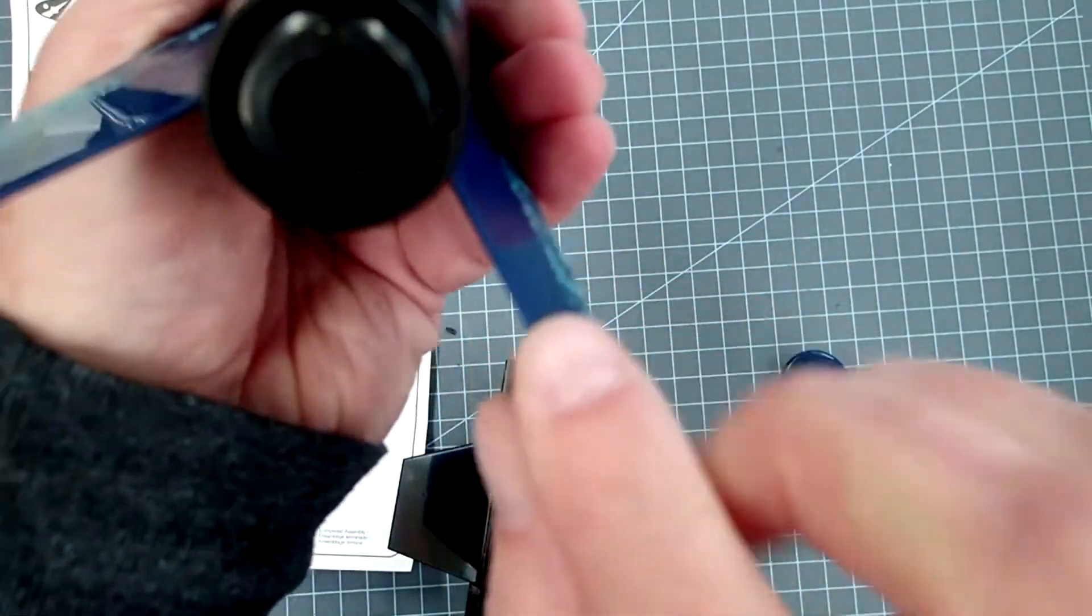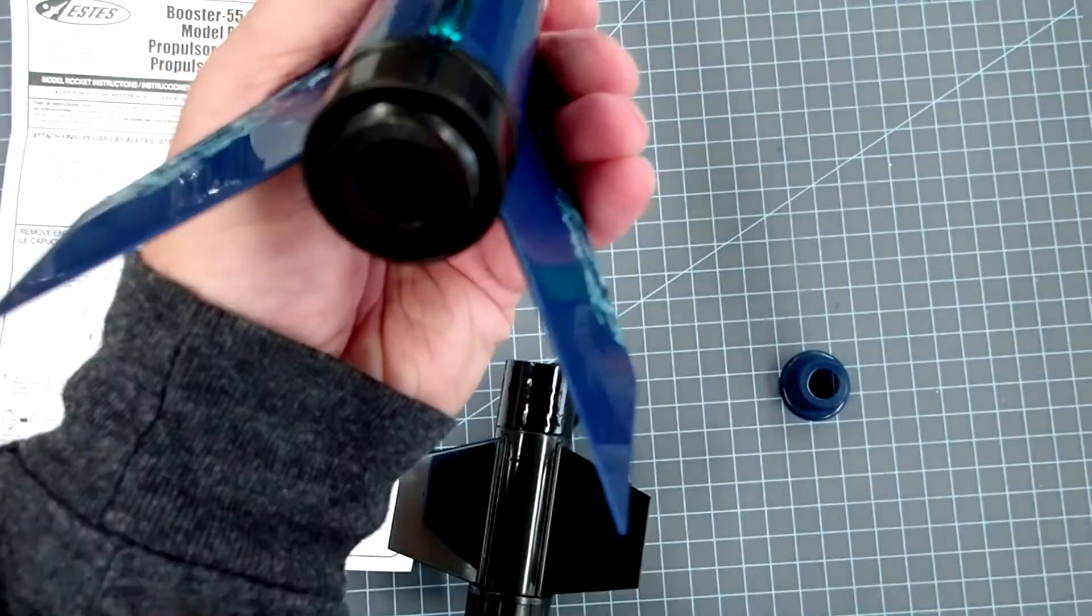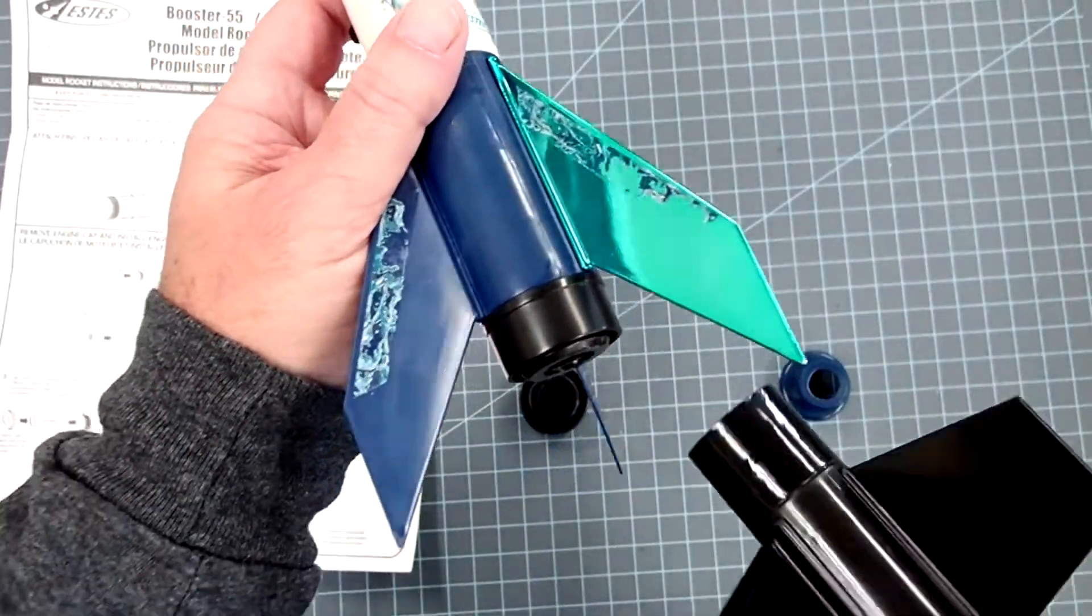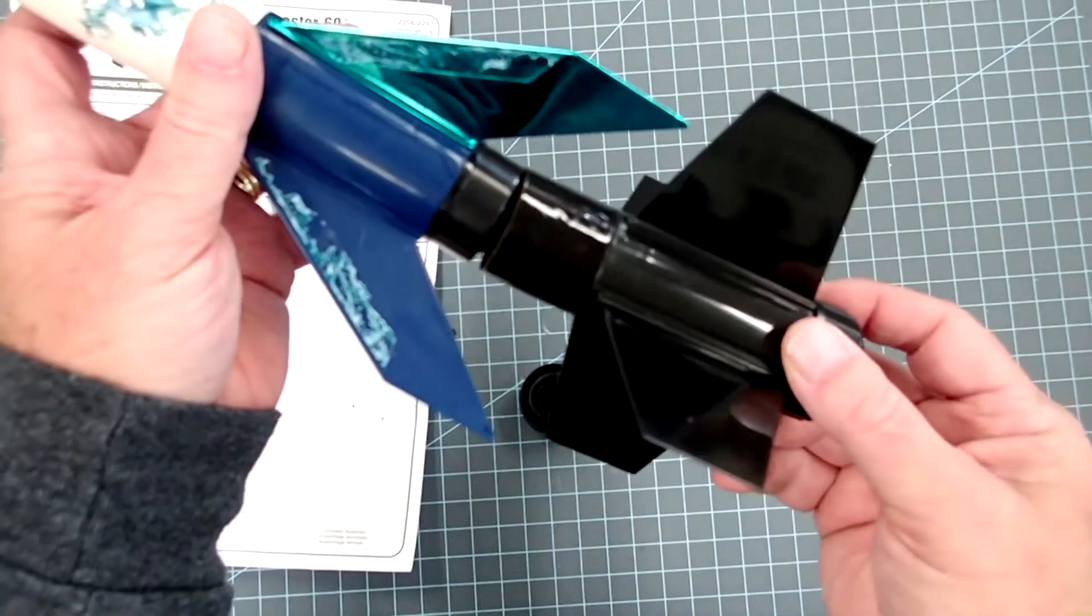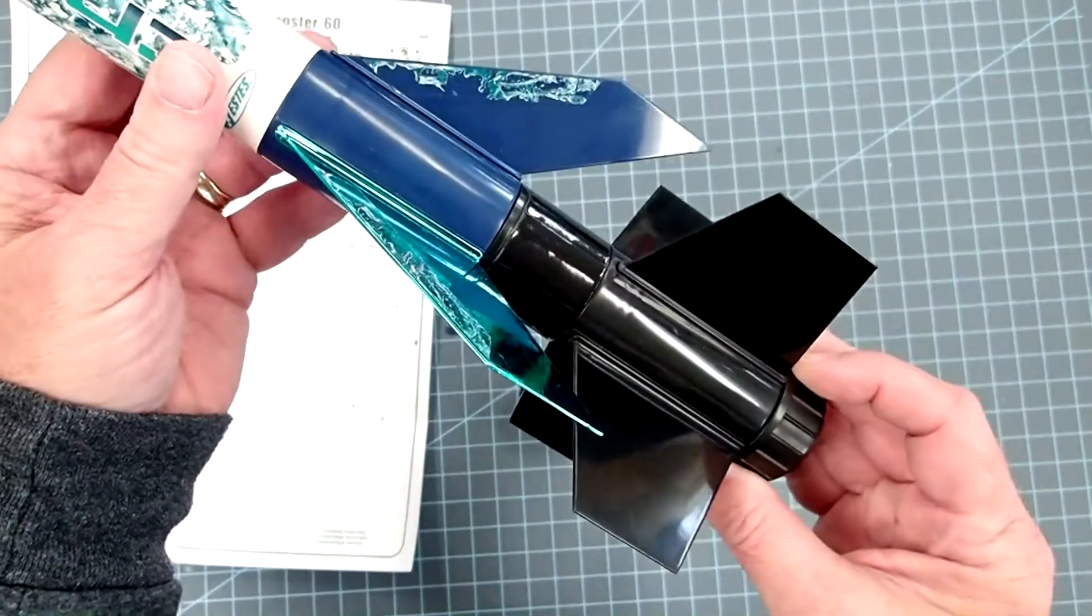Okay, and so the exhaust is going to come out through this hole of the sustainer. And then when this is built, this simply moves into place here.